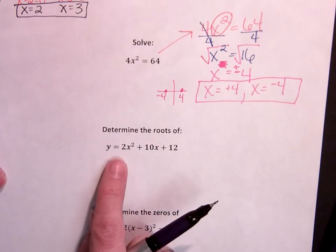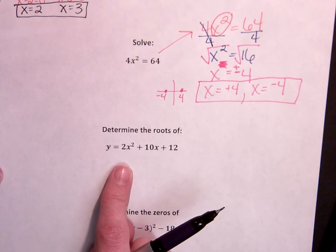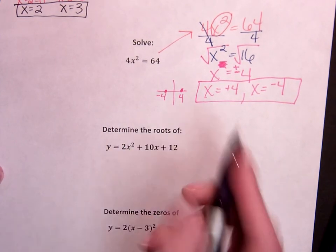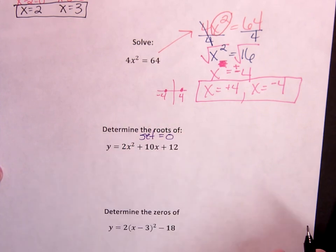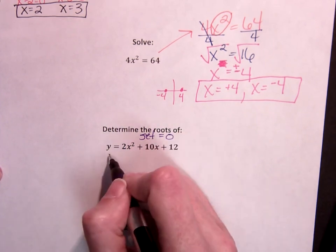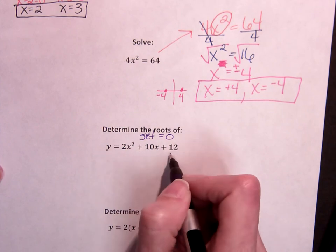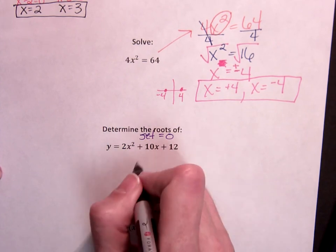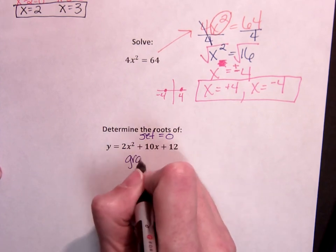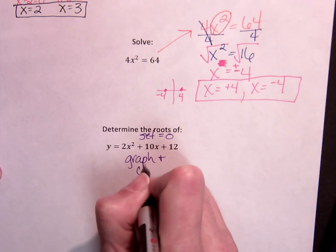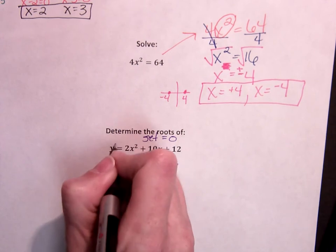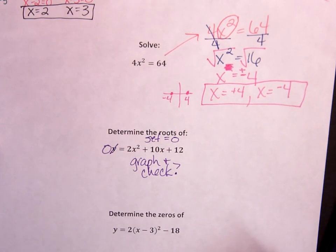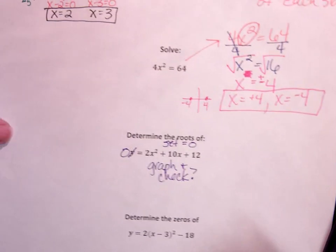So again, sometimes it's not straight up, solve this. Determine the roots, which means we're going to set it equal to 0. And I've got y equals 2x squared plus 10x plus 12. So I could graph it and check, or I can set this equal to 0 and solve. Because we're practicing algebraic, that's what we're going to do.